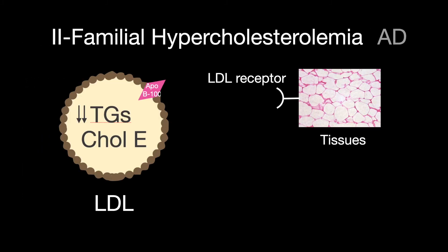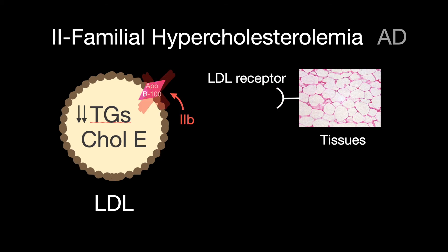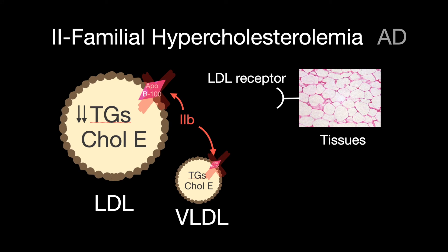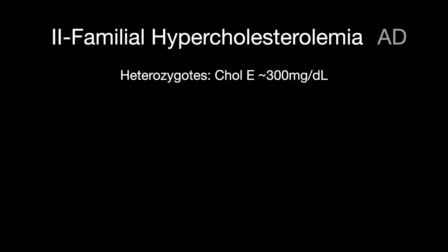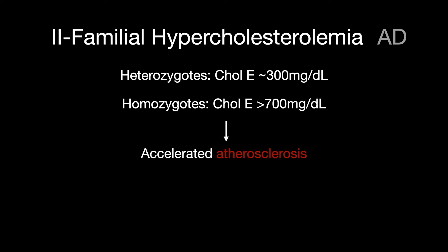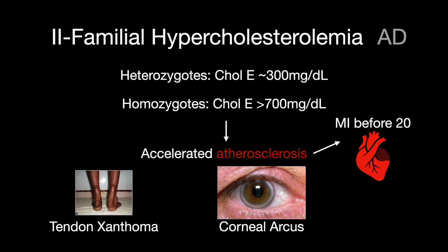Type 2 familial hypercholesterolemia is autosomal dominant. Type 2a is caused by absent or defective LDL receptors, resulting in increased blood levels of low-density lipoproteins and cholesterol. Type 2b is caused by defective APO-B100, which affects very low-density lipoproteins as well, increasing levels of LDL, cholesterol, and VLDL in the blood. Heterozygotes have cholesterol levels of about 300 mg/dL; homozygotes have cholesterol greater than 700 mg/dL, causing accelerated atherosclerosis and increasing the risk of myocardial infarction before age 20. Tendon xanthomas of the Achilles and corneal arcus also occur.